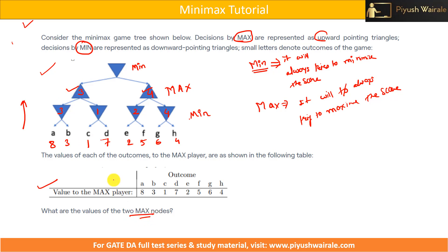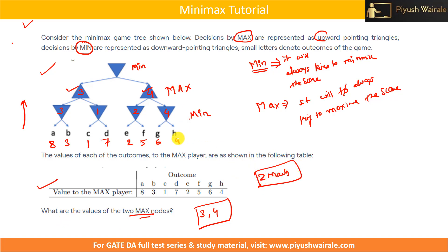So the values of the two max nodes are 3 and 4. In some questions, they can also ask for the value of the root node for the min player. The min player always tries to minimize the score — out of 3 and 4, the minimum is 3. So the value of the root node will be 3.